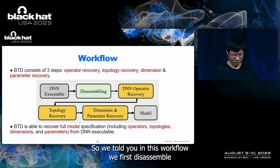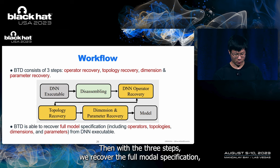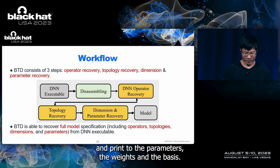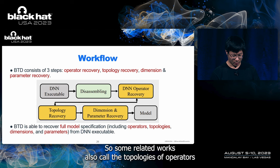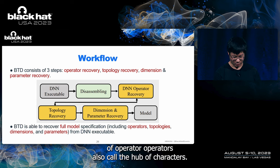As shown in this workflow, we first disassemble the targeted DN executable with IDA Pro. Then with the three steps, we recover the full model specification, including operator topologies, dimensions, and pre-trained parameters like weights and biases. Some related works also call the topologies of operators the computational graph, and the dimensions of operators the hyperparameters.